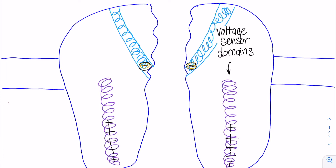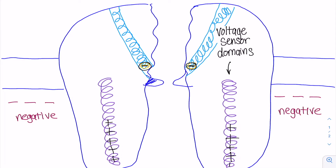During the resting state of the neuron, when the inside of the cell is negative, the gate is closed.